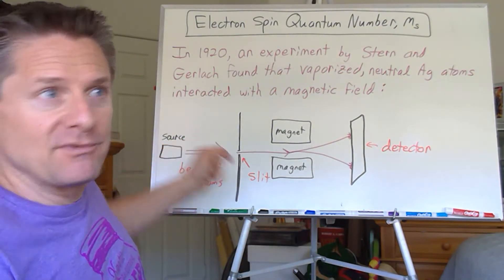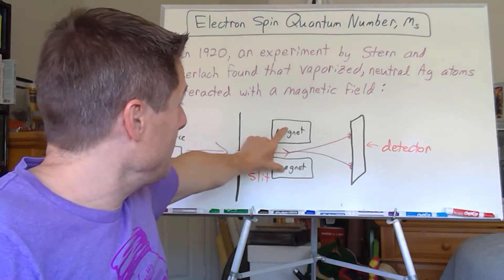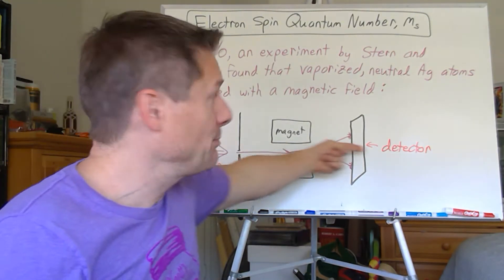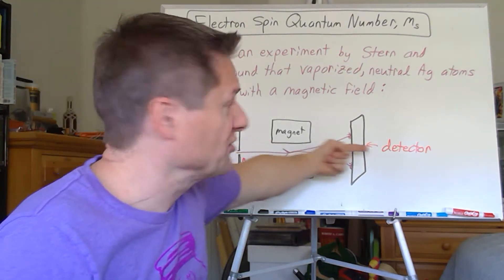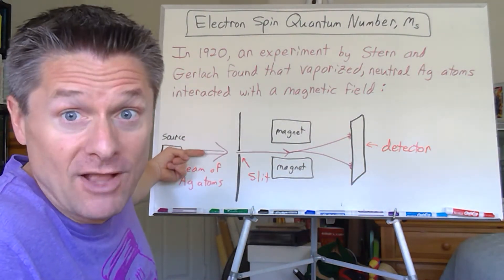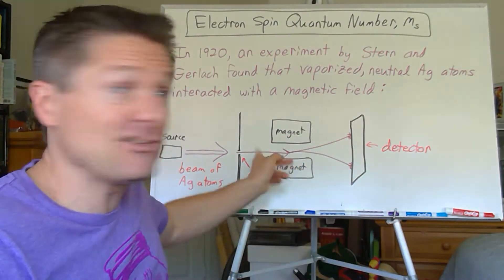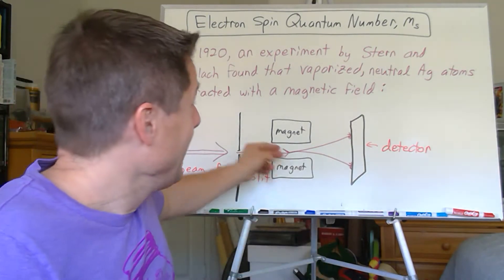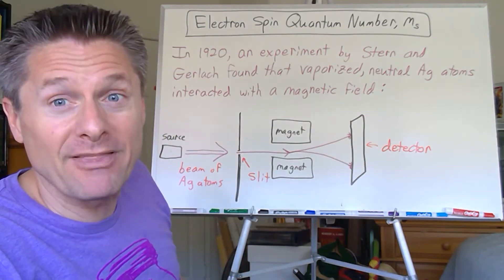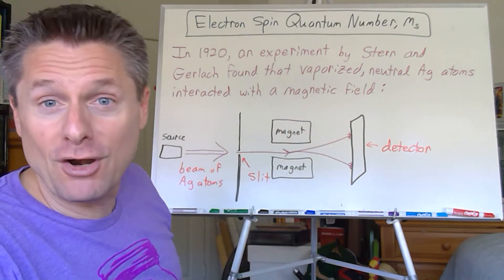They took the beam of silver atoms, used a slit to get a directed beam, and shot it through an external magnet. You'd expect a neutral beam of silver atoms to go straight — similar to the cathode ray tube. Normally, electrons are charged, so they curve in a magnetic field. But these are neutral atoms; they shouldn't curve. Yet they did curve — and not only that, half went one way and half went the other way.